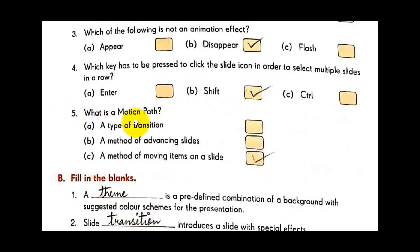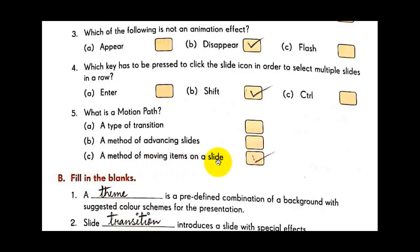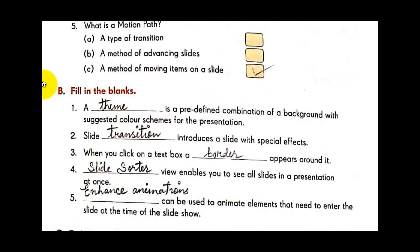Question five: What is a motion path? Options: A type of transition, a method of advancing slides, or a method of moving items on a slide. A motion path is a method of moving items on a slide — moving according to a predefined path. The answer is C.